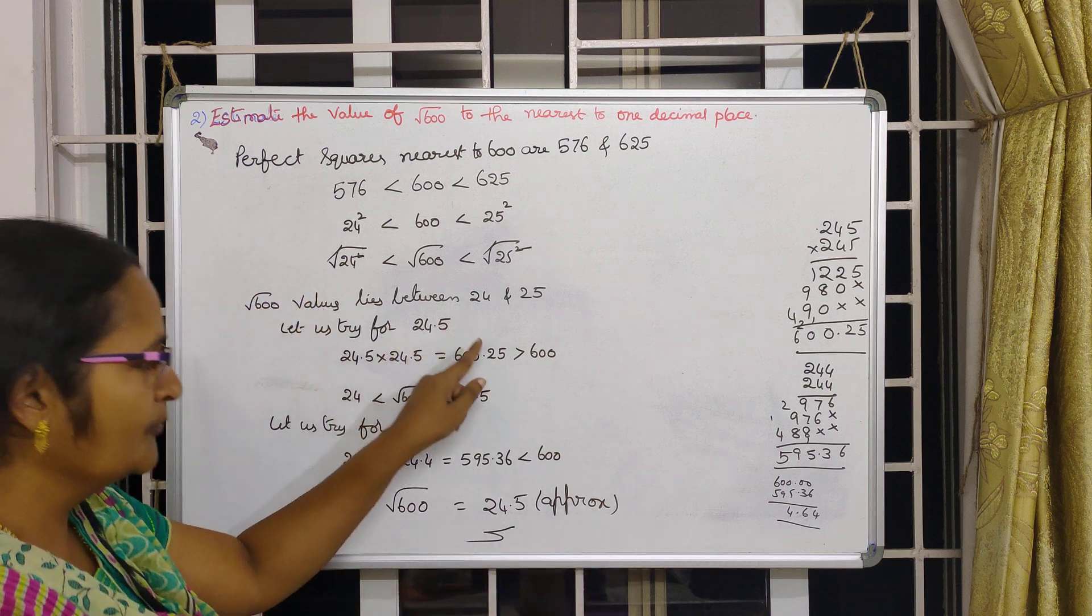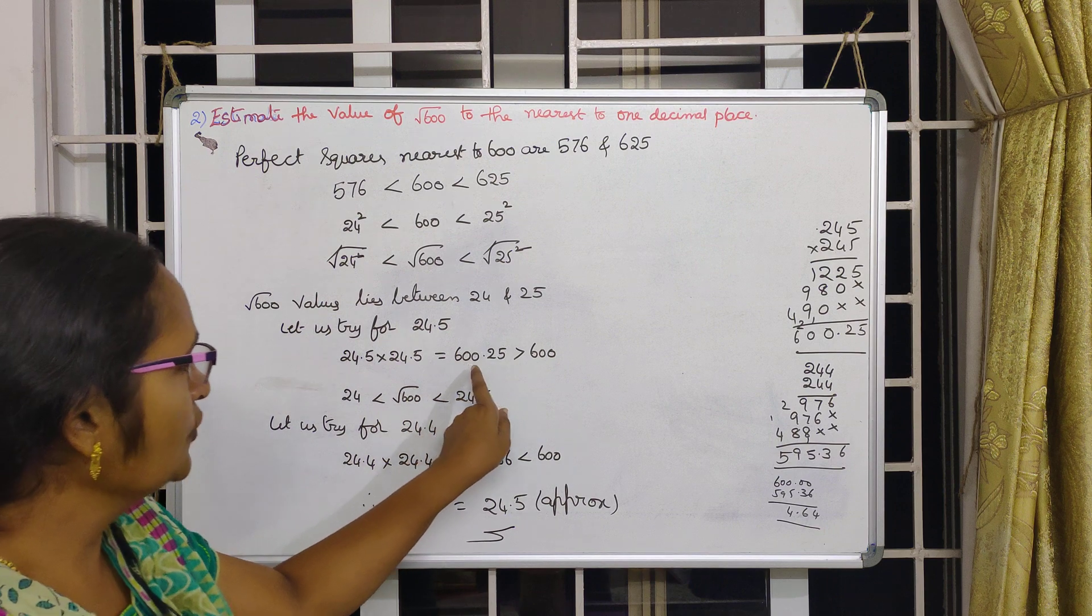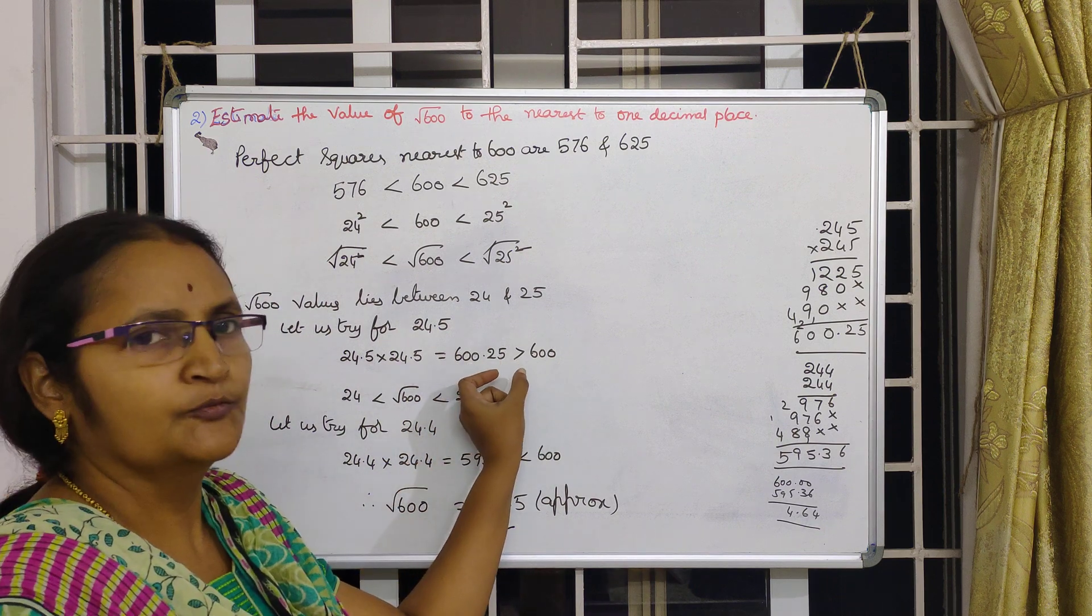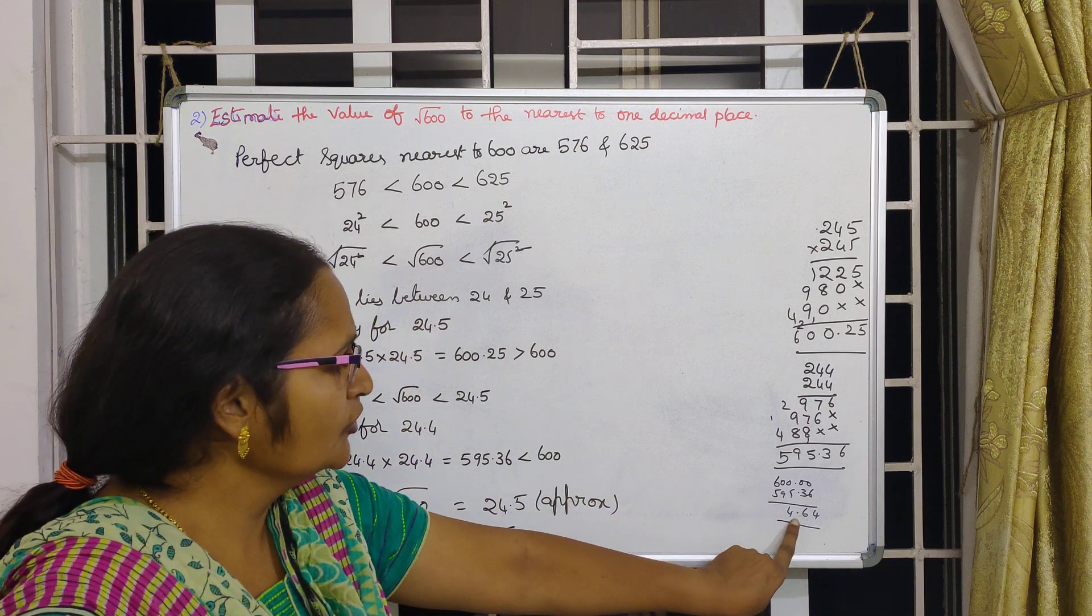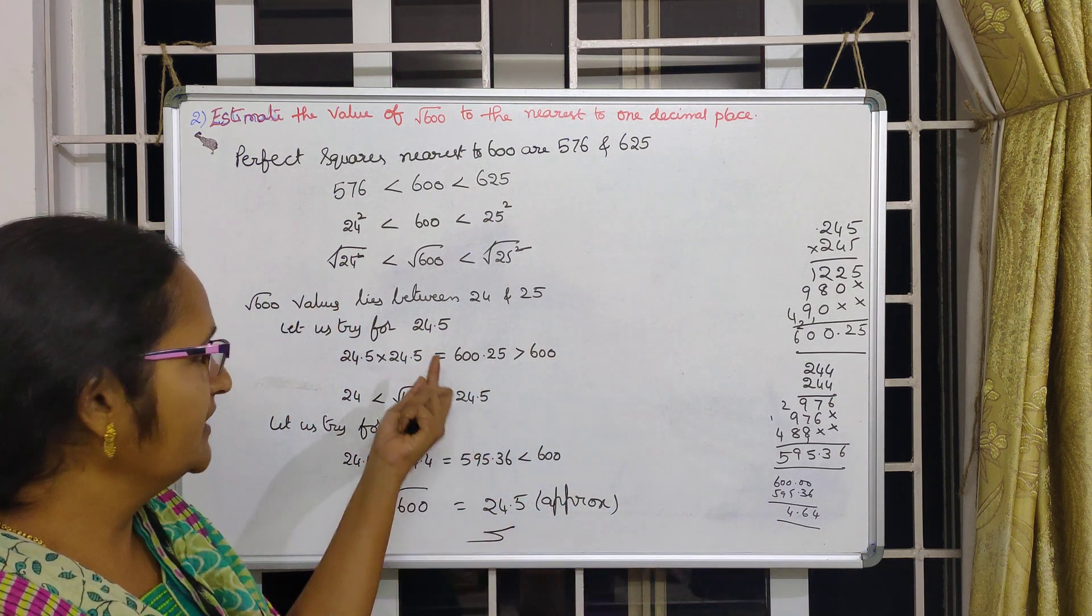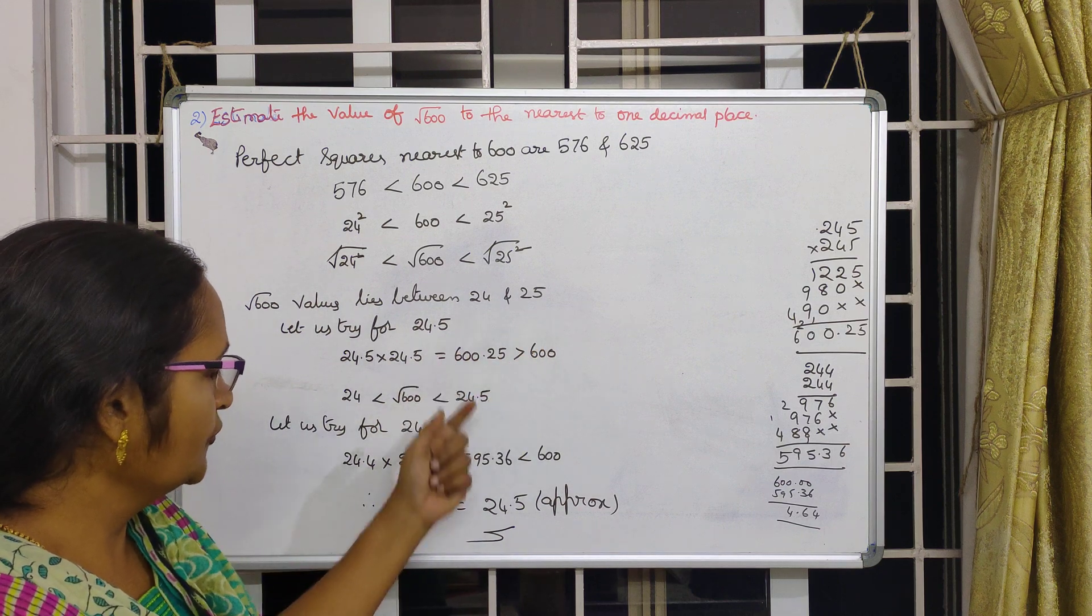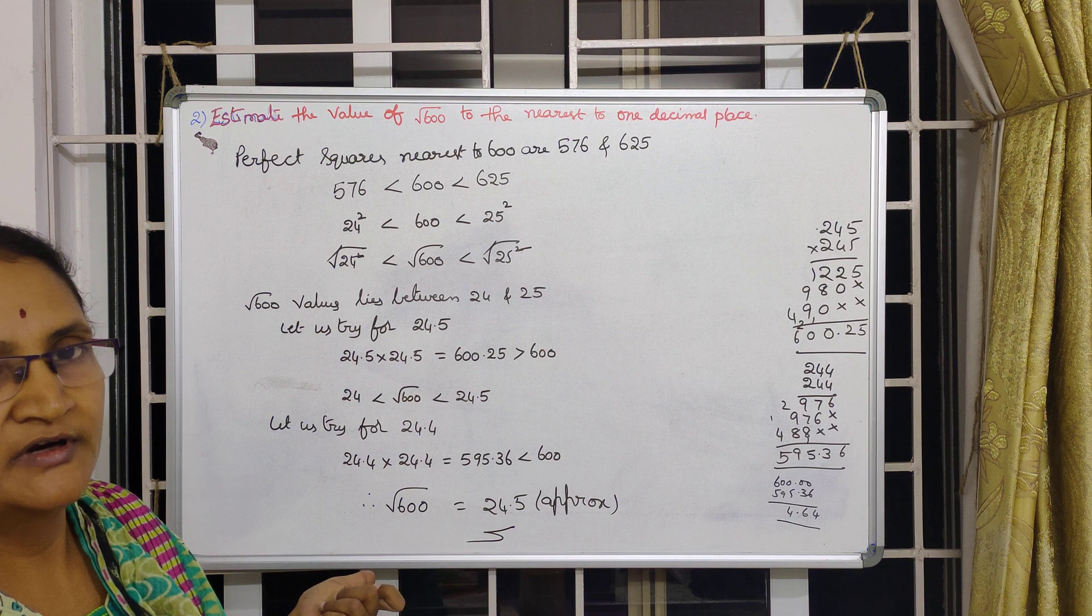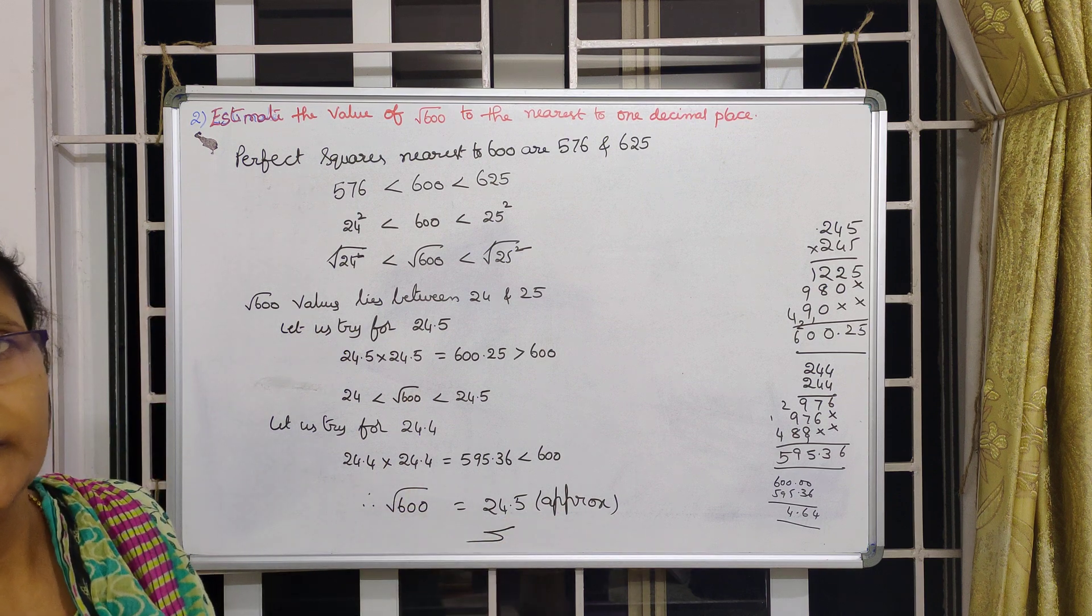Which one is nearer? Among these two which one is nearer? You have to check it out in that manner. This is only 0.25 only more and it is 4.64 less. Among 4.64 and 0.25, 0.25 is the less. That is much less only. That is why we are considering 24.5 is nearer to root 600. That is approximate value of root 600 is 24.5. Thank you.